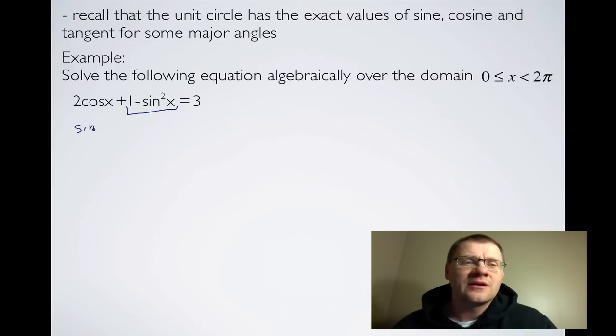So if you remember the identity sin²x + cos²x = 1, then if I were to move the sin²x over to the right-hand side, I would get cos²x = 1 - sin²x. So I can make that substitution.